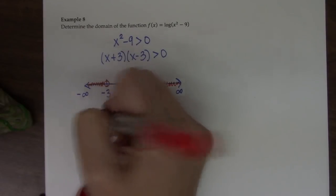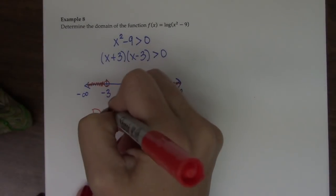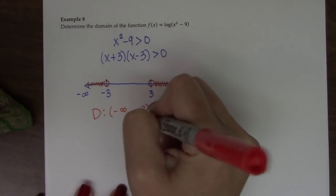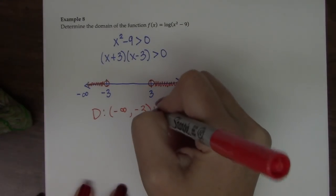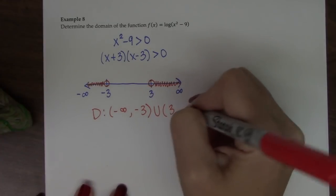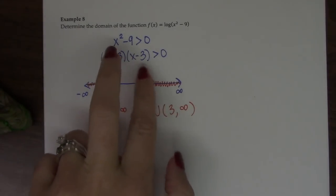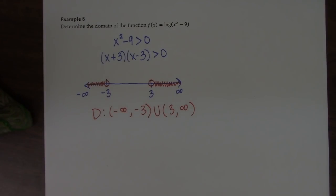So the domain of the function, I just simply read the number line from left to right. It's negative infinity to negative 3, not included, union 3 to positive infinity. So be careful when you're evaluating a quadratic and you've set up an inequality because you've got to be careful depending on the values, it can really have an effect.